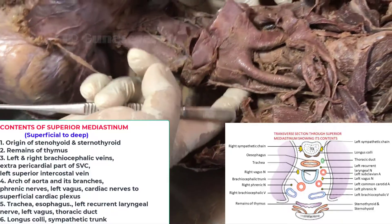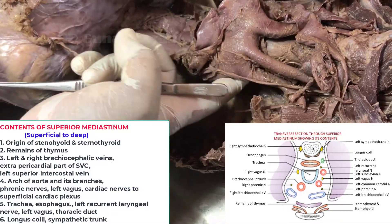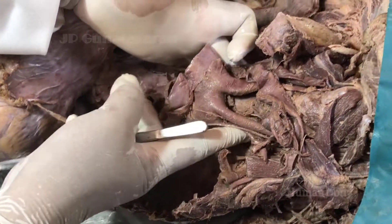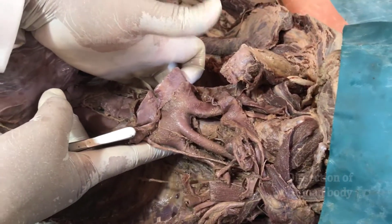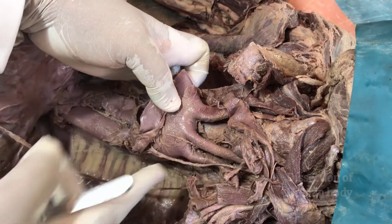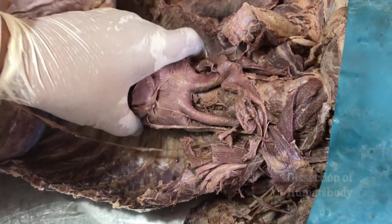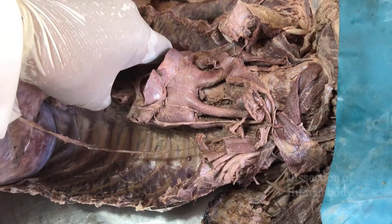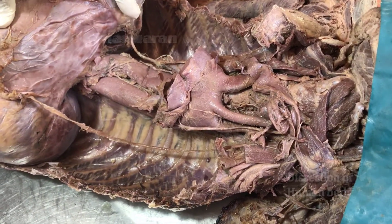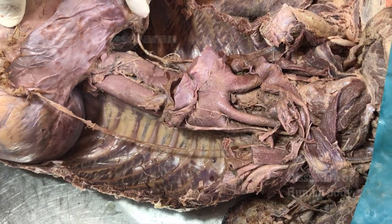Posterior most, in front of the vertebral column, you have the longus colli muscles. And of course, on either side of the vertebral column, you have the right and left sympathetic chain which may also be included in the superior mediastinum — though of course it is a long chain found in the posterior mediastinum also. With this, we come to the end of the section of the superior mediastinum.